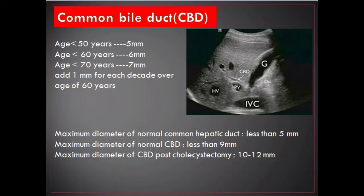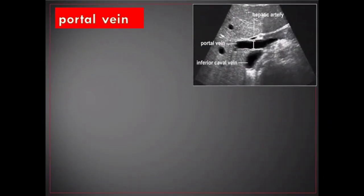Measurements of the common bile duct: age below 50 years is 5 millimeters, age below 60 years is 6 millimeters, age below 70 years is 7 millimeters, and add 1 millimeter for each decade over age 60. Maximum diameter of the normal common hepatic duct is less than 5 millimeters. Maximum diameter of the normal common bile duct is less than 9 millimeters. Maximum diameter of common bile duct post-cholecystectomy is between 10 and 12 millimeters.